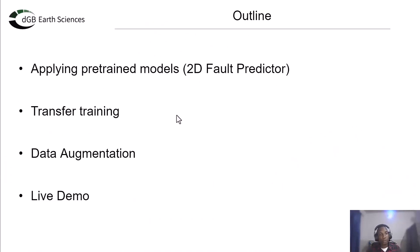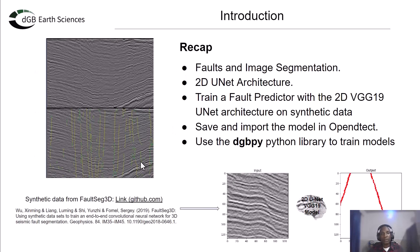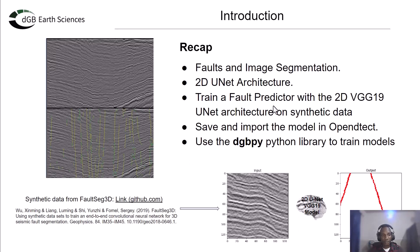We're also going to be looking at transfer training and data augmentation. As a short recap of the previous webinar, we trained a 2D UNet architecture — a 2D UNet model based on the VGG19 architecture — on a synthetic dataset. We also looked at how to save and import this model in OpendTect. We explained a lot about what faults are and how they are image segmentation tasks, where we train a model to predict what each pixel in the image belongs to.